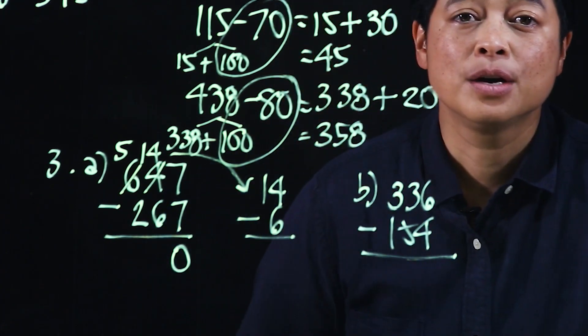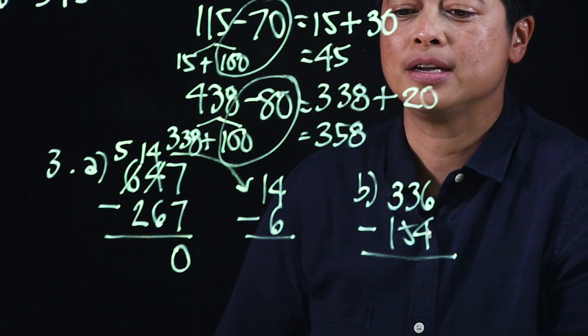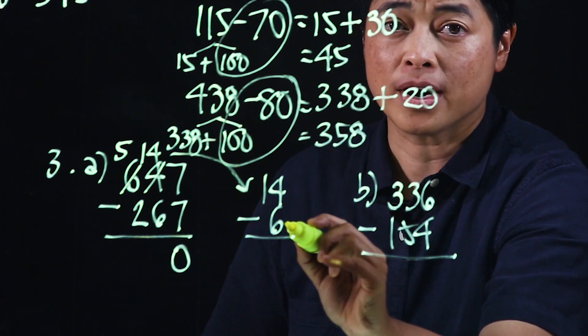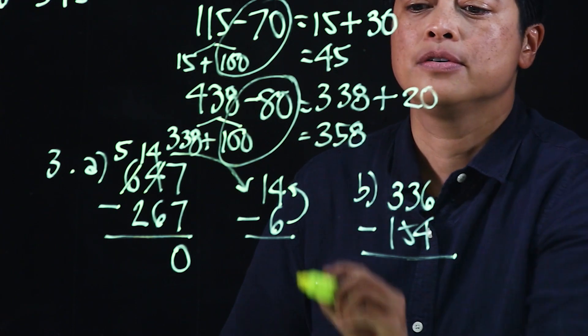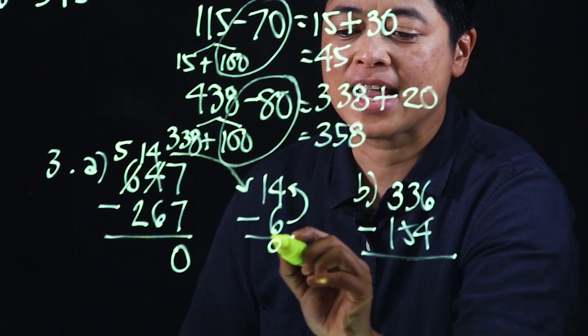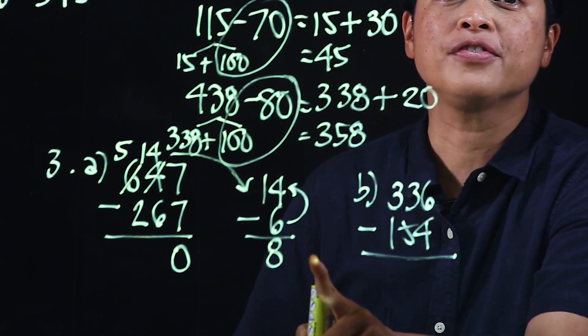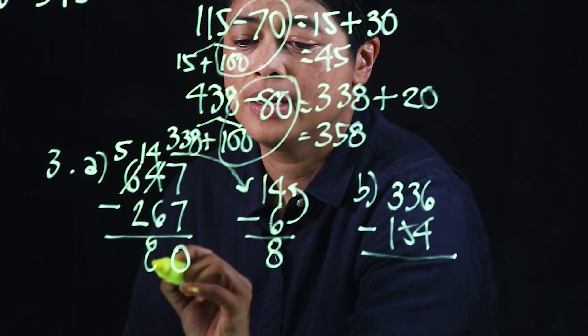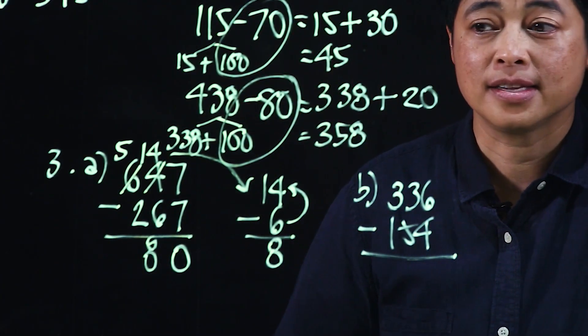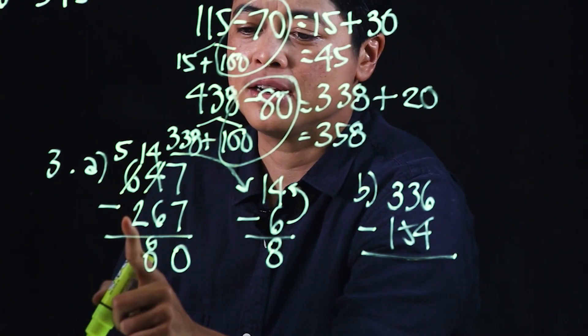Now when we take the 14 and subtract the 6, we need to use the same strategy. We need 4 more to get to 10 and we need another 4 to get to 14, which means this is 8. So if it's more comfortable for your kids to write it here before writing it here, allow them until they get used to it. 5 minus 2 is 3.